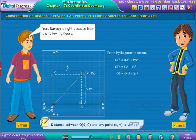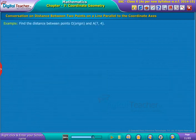Note that distance between O(0, 0) and any point (x, y) is root x square plus y square. For example,